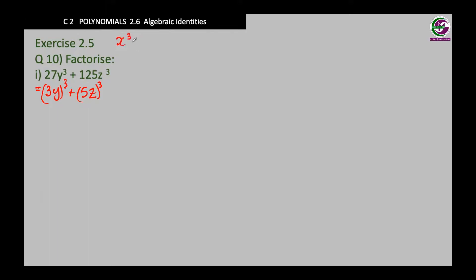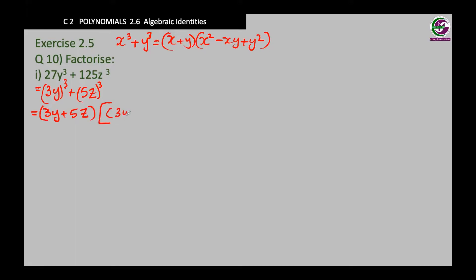The identity is x cube plus y cube, which equals x plus y times x squared minus xy plus y squared. Remember there is no 2 here. If the first bracket has plus, the second bracket's middle term is minus. So when we rewrite this polynomial, the first bracket has the first and second terms without any power, and the second bracket has first term squared minus first term times second term plus second term squared.